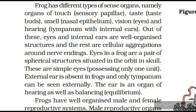Frogs have different types of sense organs: organs of touch (sensory papillae), taste (taste buds), smell (nasal epithelium), vision (eyes) and hearing (tympanum with internal ears). Eyes and internal ears are well-organized structures; the rest are cellular aggregations around nerve endings. Eyes are a pair of spherical structures situated in the orbit of the skull — simple eyes possessing only one unit. External ear is absent in frogs; only the tympanum can be seen externally. The ear is an organ of both hearing and balancing (equilibrium).